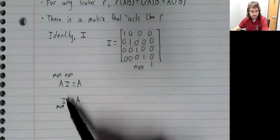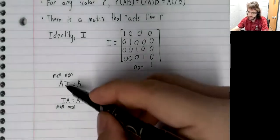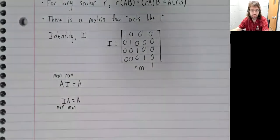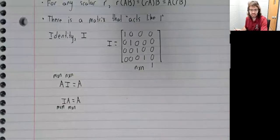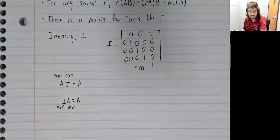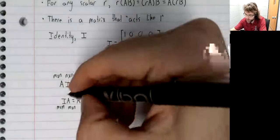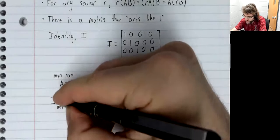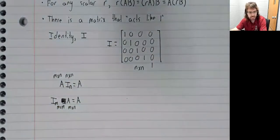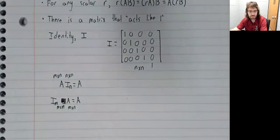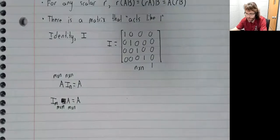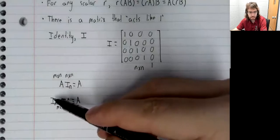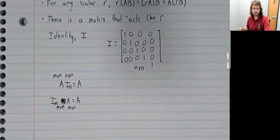So we use the same notation, but this matrix and this matrix are actually different. They're of different dimensions, and that's usually not going to cause any confusion. But if we're worried about that, we sometimes put the size of the identity matrix in a subscript. So we can write I sub N and I sub M to make sure there's no confusion.